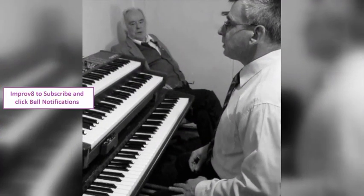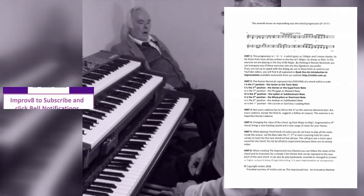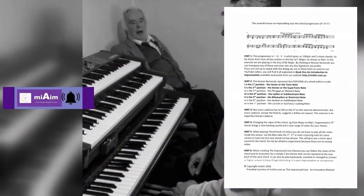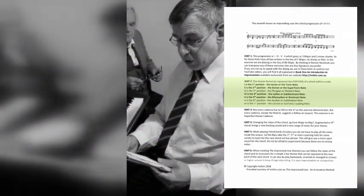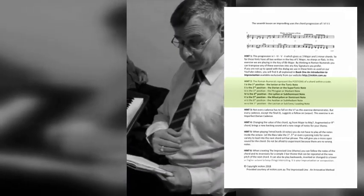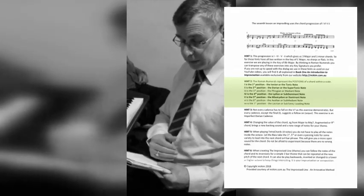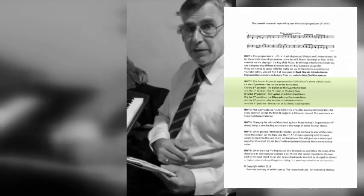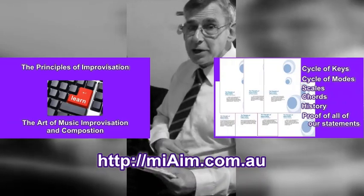The reason we use Roman numerals is because it's easier to think that way and transpose into any key. On the chart you'll see the ones we use are all highlighted - the 1, 4, 5, 2 are the ones we're using today. The first position is the Ionian, which is the mode that most music is written in. The Dorian is the second position, and today we've got a Dorian cadence. The fourth position is the Lydian and the fifth is the Mixolydian.